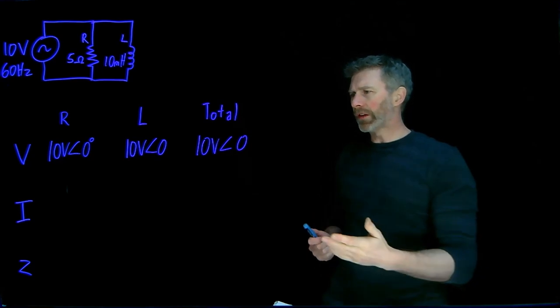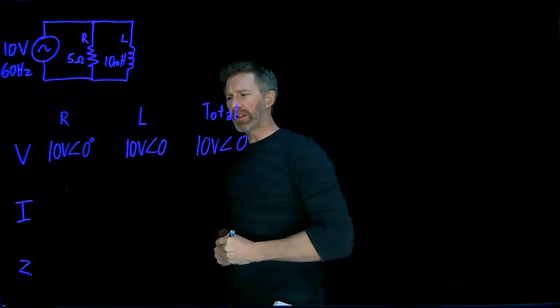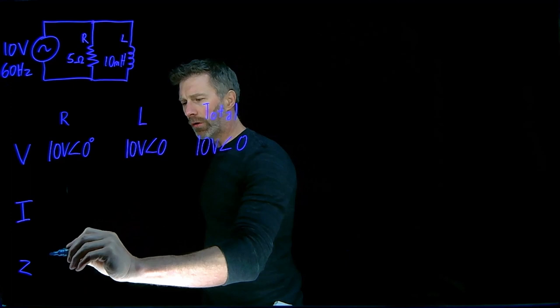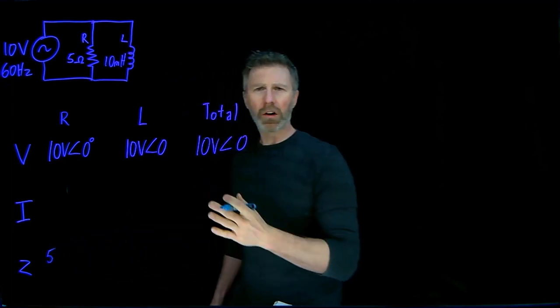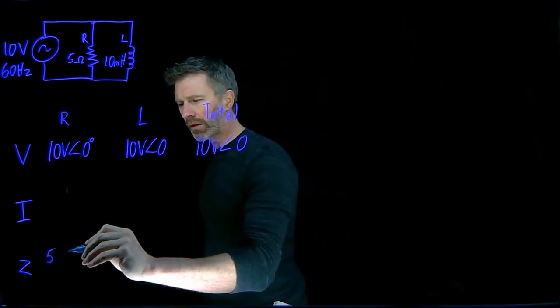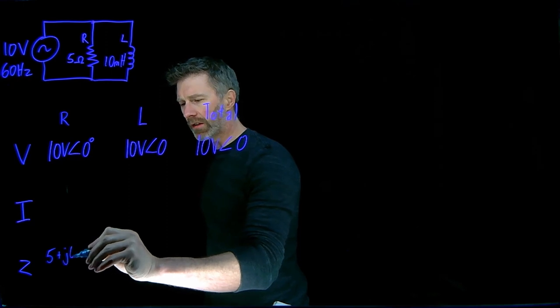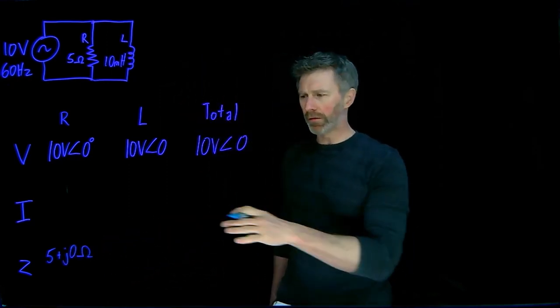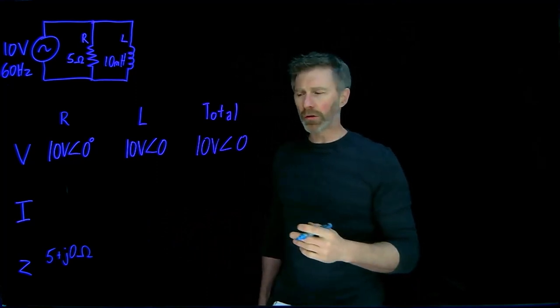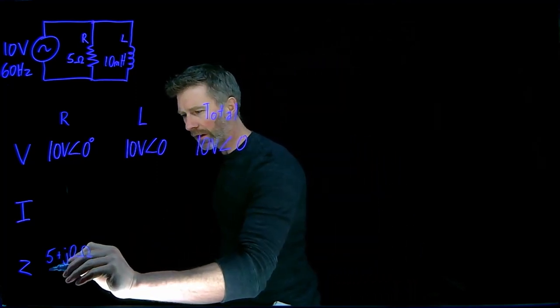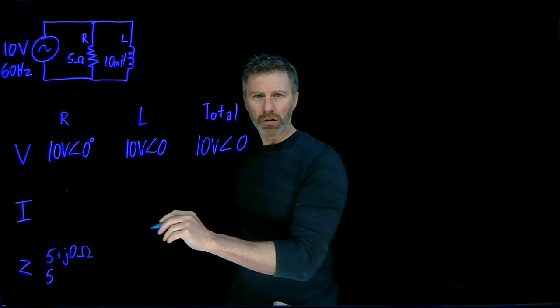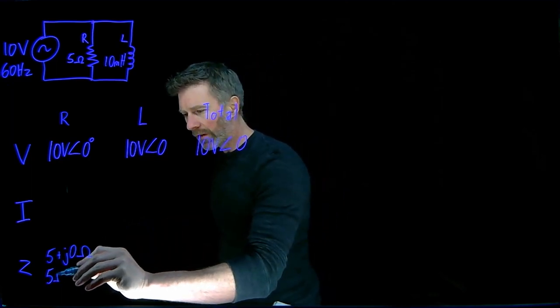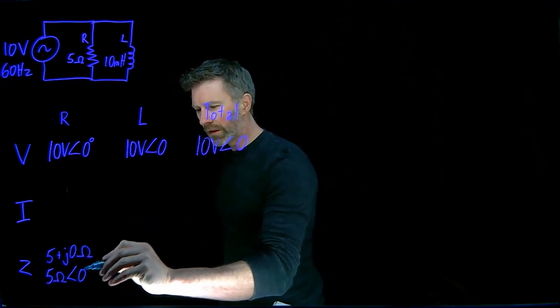What else do I know? Well, I know the impedances. The impedance of that resistor is 5 ohms, and it's all real impedance, so it's 5 plus j0 ohms in rectangular coordinates. I can convert this into polar coordinates - very easy for this because there's no imaginary component - it's 5 ohms with a phase angle of zero degrees.